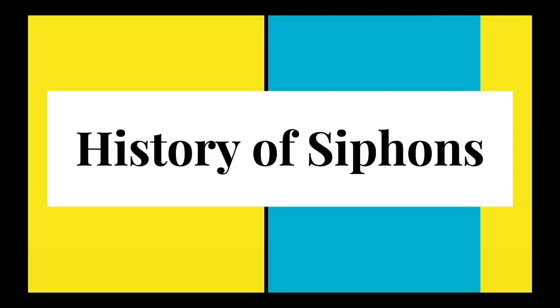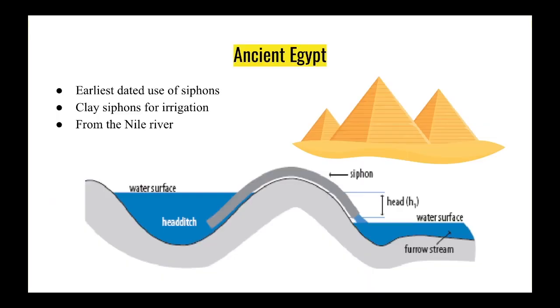First, we're going to talk about the history of siphons. The earliest dated use of siphons was in ancient Egypt, where they used clay siphons for irrigation to get water from the Nile River to their agriculture.